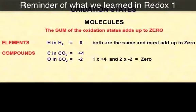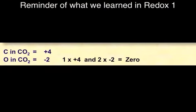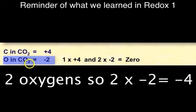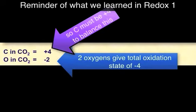In any neutral molecule, the sum of the oxidation states must add up to zero. In CO2, each oxygen has an oxidation state of minus two; two of those together make minus four. To balance that out and keep the molecule neutral overall, the carbon must have an oxidation state of plus four.